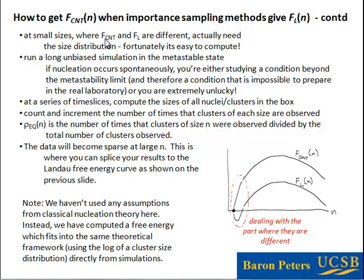At small sizes, the two curves differ. The classical nucleation theory minimum reflects which nucleus is most populous, while the Landau free energy minimum reflects which size is most commonly the largest in the system — not the most populous, just typically present in some small amount. So at small sizes, these two things are different, and we actually need to compute that size distribution.